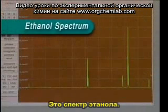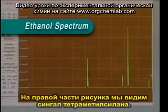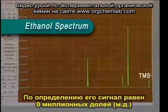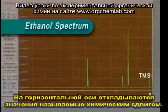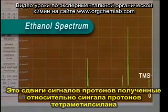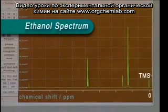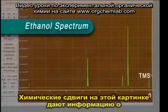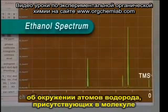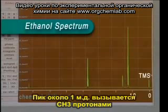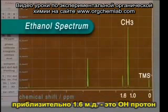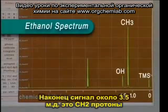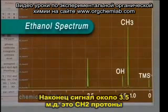Here is the spectrum of ethanol. The peak to the far right is that from the TMS reference, which by definition is at zero parts per million (ppm). The distance leftwards along the horizontal axis is called the chemical shift, and it is measured relative to the peak obtained from the hydrogen atoms in TMS. The chemical shift of a peak gives information about the molecular environment of the hydrogen atoms it represents. The peak at around 1 ppm is caused by the CH3 protons, that at approximately 1.6 ppm is the OH proton, and that at approximately 3.5 ppm is from the CH2 protons.